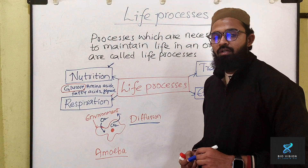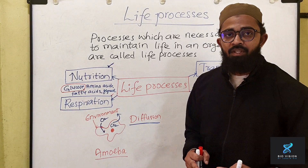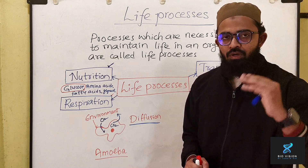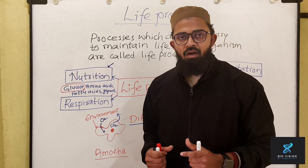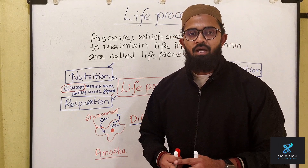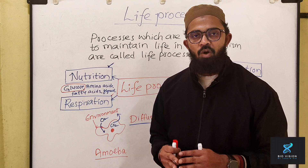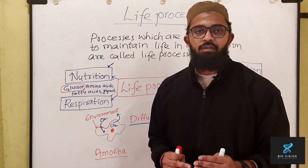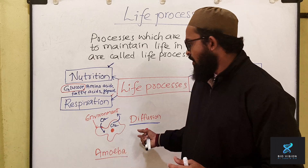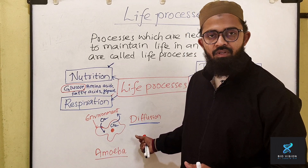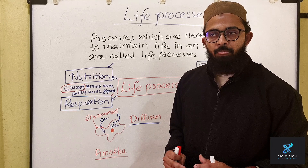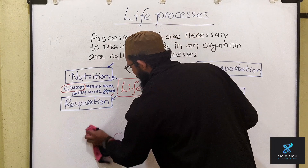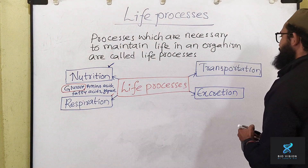But in multicellular organisms made up of more than one cell, how does transportation and gas exchange occur? In our body — which is an example of a multicellular organism — our cells are not in direct contact with the environment; they are present inside the body. That's why diffusion will not meet the requirements of substances. We have a complex body, so we require separate systems in our body. The third life process is transportation.